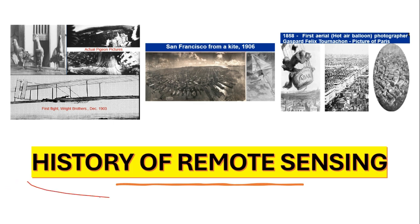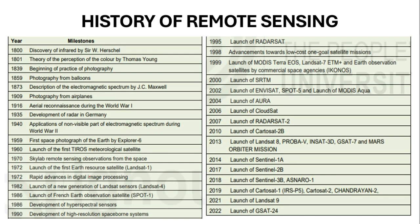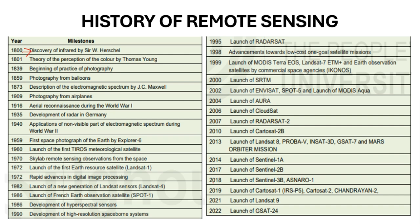Next we will learn about the history of remote sensing. I have provided year-wise milestones in remote sensing across two slides — from the discovery of infrared to the launching of different kinds of satellites and what kind of satellites were launched in which year. In history of remote sensing, most things you have to learn are the year and what happened in that year. I will share this list so you can learn about all these milestones.